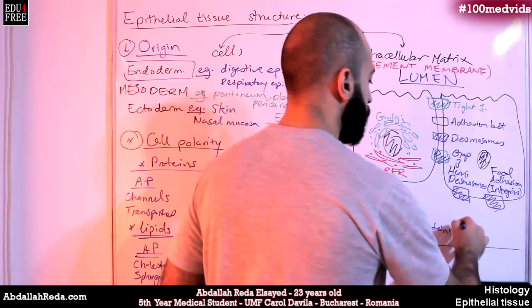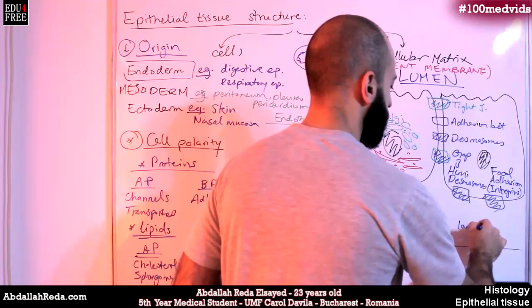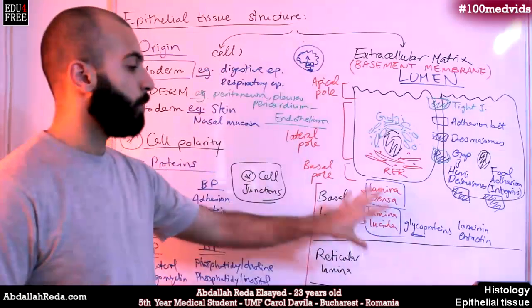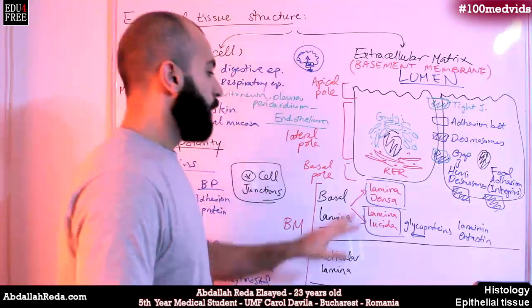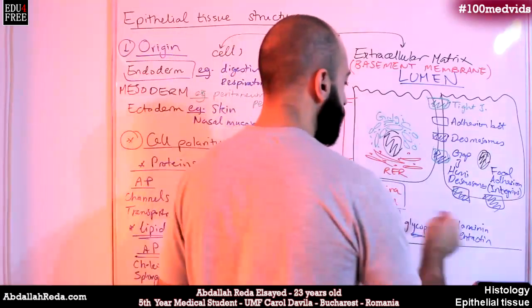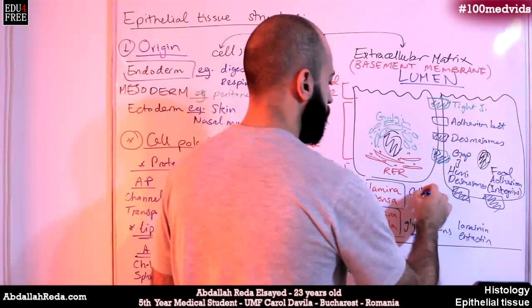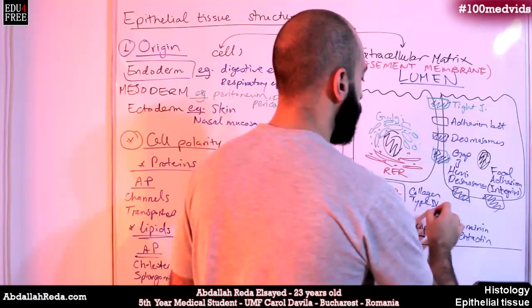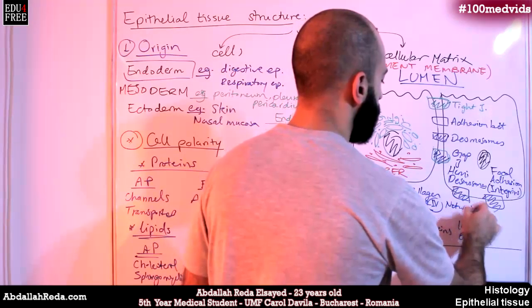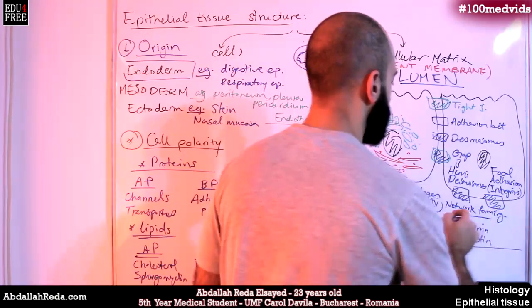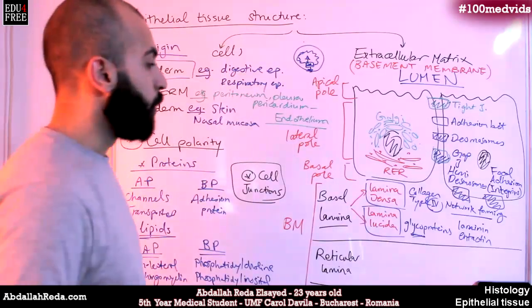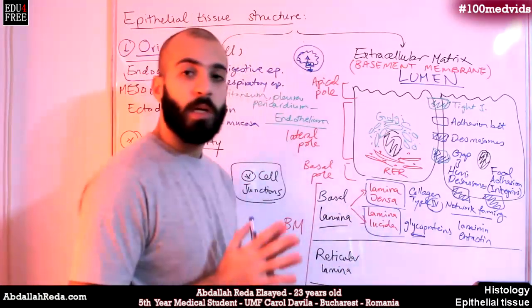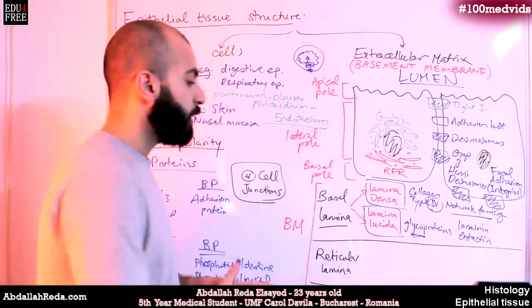Lamina lucida contains glycoproteins — sugars and proteins — the main ones are called laminin and entactin. Those are the sugars that help to stick all the layers together. In lamina densa, we have collagen fibers — specifically collagen type 4, which is called network-forming collagen. This is the collagen that makes up a network connecting the epithelial tissues with the layers beneath. Lamina lucida is the adhesion layer that helps all the layers stick together.